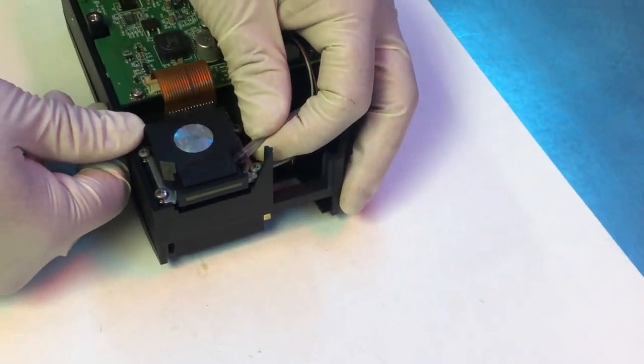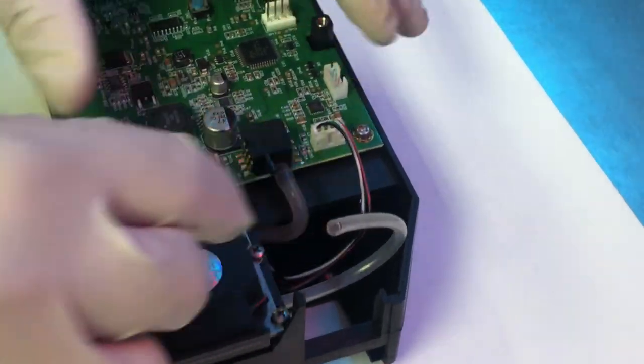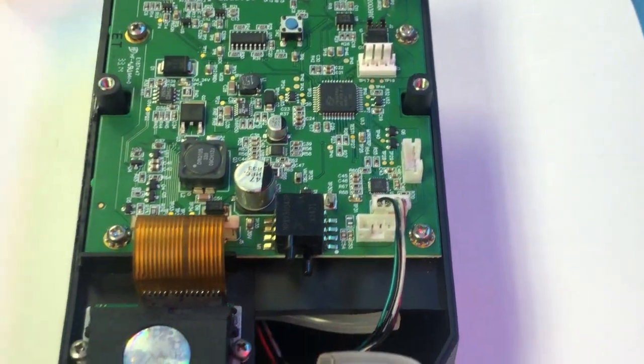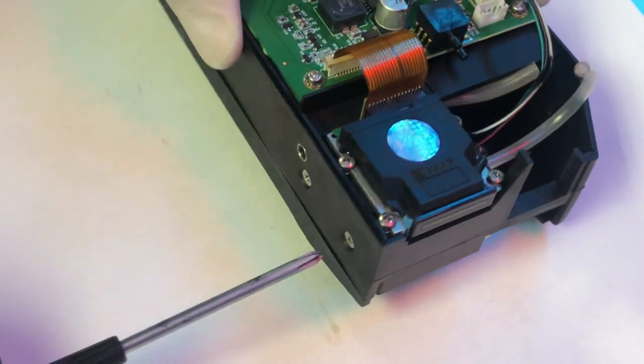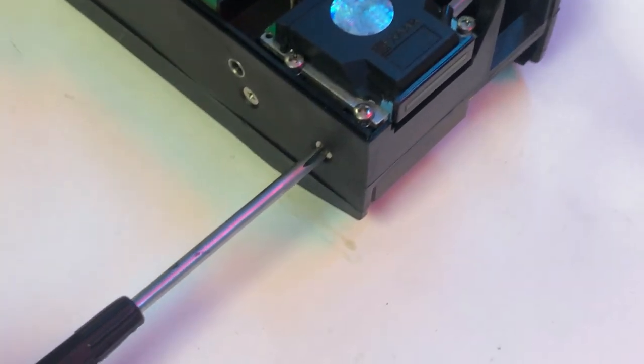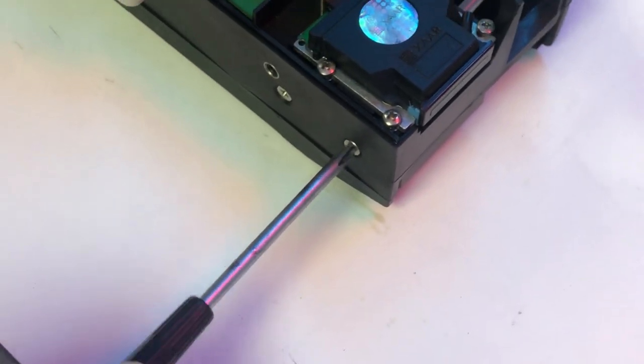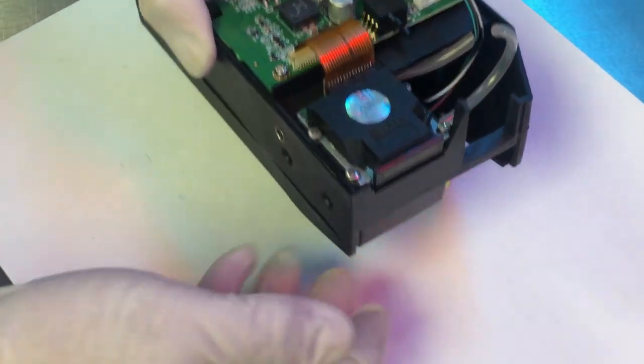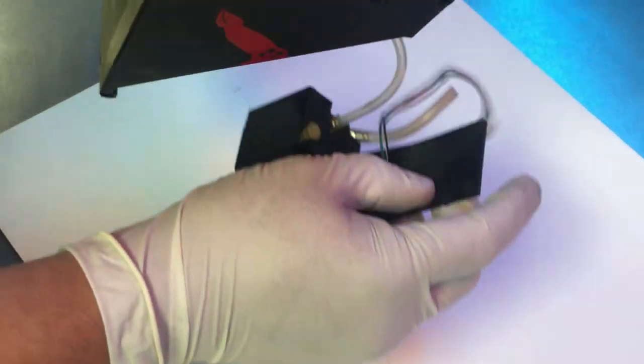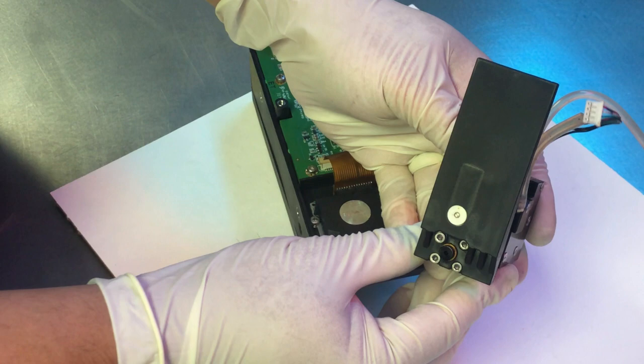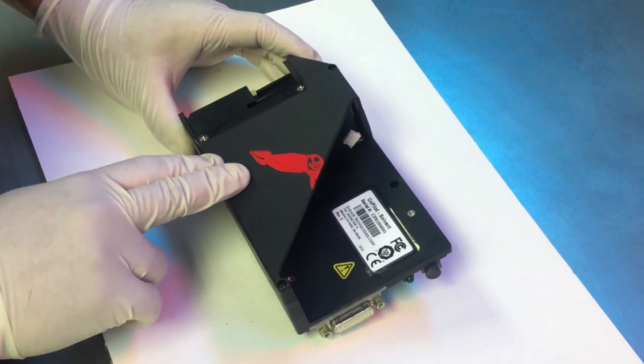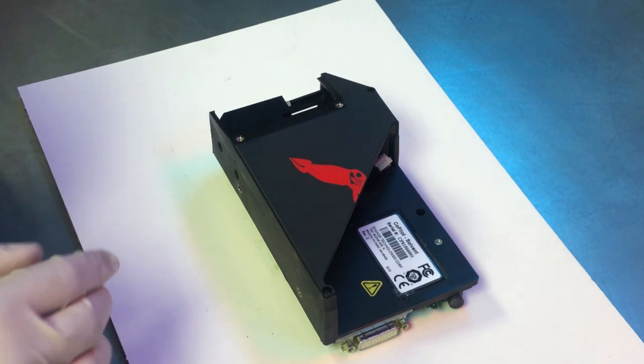First, we'll do the ink line, just pull out. Vacuum line, and stepper motor connection. Next, we'll go ahead and undo the screws on the bottom holding it in place. With that, the ink manifold should just slide out. Now to perform the manifold replacement, this cover doesn't need to be removed, but I'm going to go ahead and remove it and show you what it looks like underneath there.